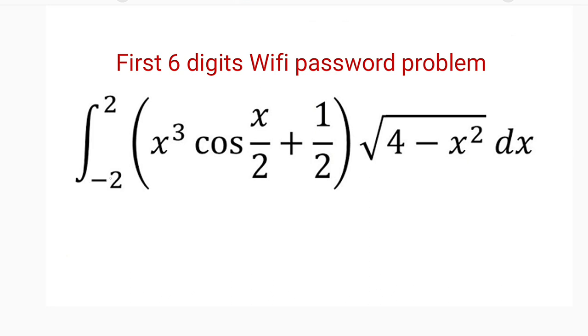Alright, we are given the integral from negative 2 to 2 of x to the power of 3 cosine x divided by 2 plus 1 over 2 all multiplied by the square root of 4 minus x squared dx.